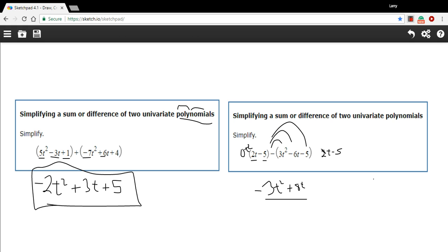So we've got our 2t minus 5. And now I'm going to say plus and we'll distribute the negative sign. We've got a negative 3t-squared plus 6t because of the negative times the negative. And same with the 5, a plus 5.